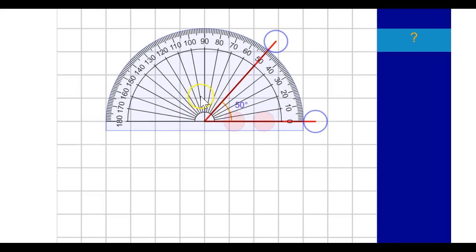So what you want to do is put your vertex of the angle right there at that point. Then you want to turn your protractor so that one of the rays is on 0, just like this one here.